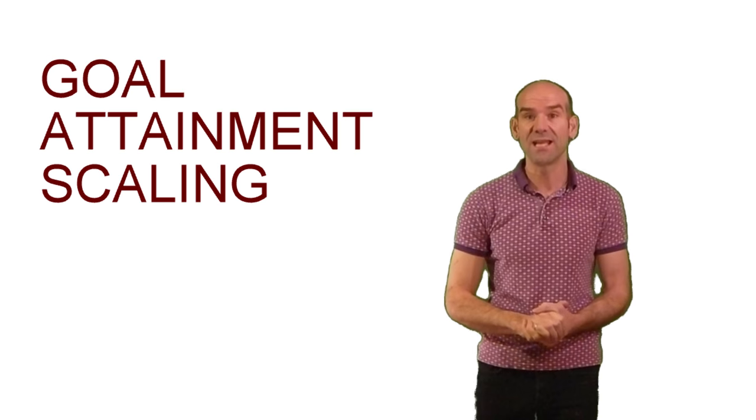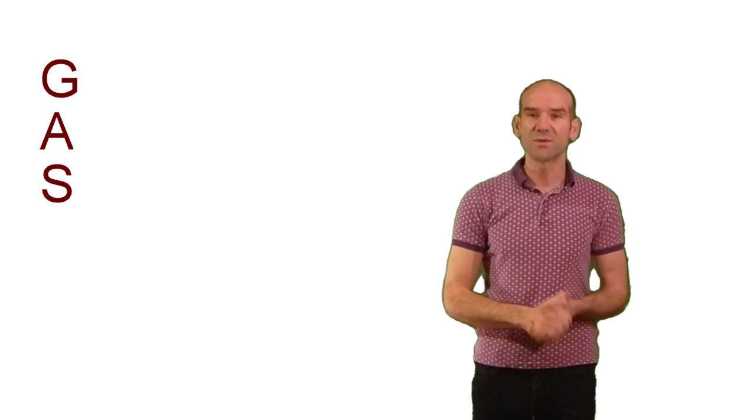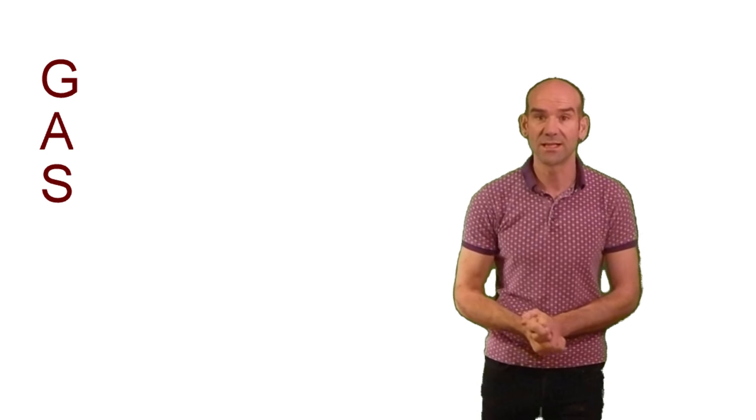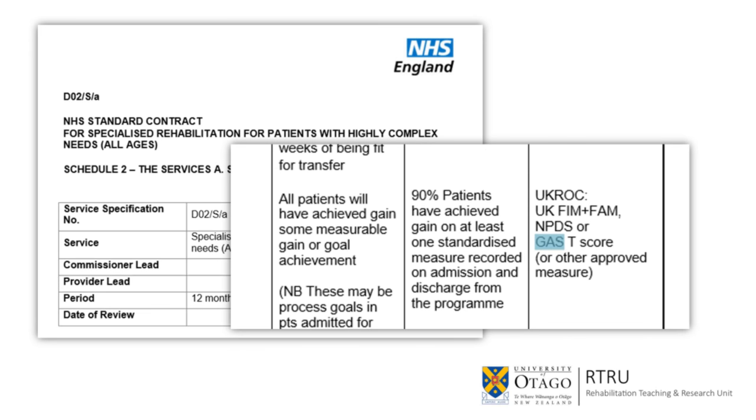In recent times, goal achievement, and in particular one method for goal setting called goal attainment scaling, aka GAS, has risen in prominence as a strategy for individualized outcome measurement in clinical rehabilitation. In the UK, for instance, reporting on GAS scores is currently a core part of the contracted service specifications for rehabilitation involving patients with highly complex needs.